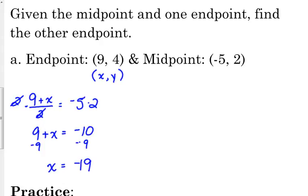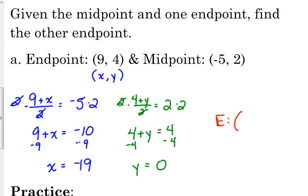Let's do the same thing, find our y. Four plus y divided by two is equal to the y coordinate of our midpoint. So we multiply both sides by two. Four plus y is equal to four. Subtract four. So we get zero for our y coordinate. So our endpoint, our other endpoint here, is negative 19, zero.